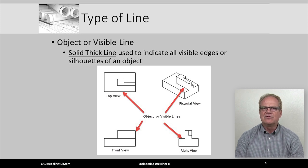As a side note, if the object were cylindrical, as opposed to rectangular like this part, then its orthographic projection would show its silhouette as solid, thick object lines.